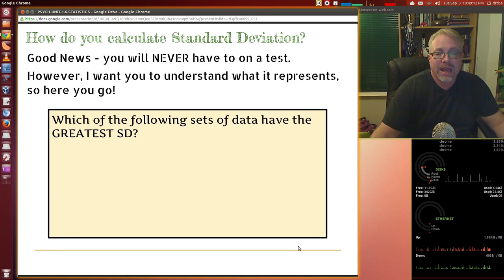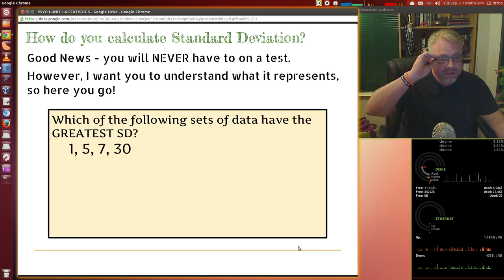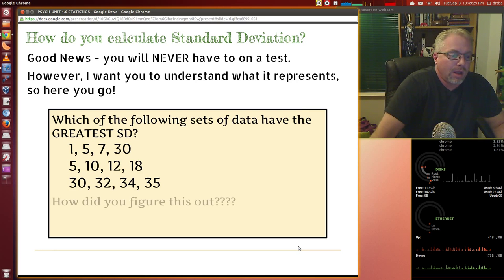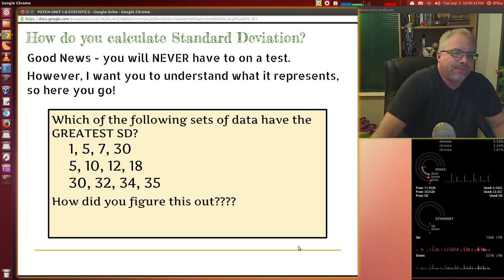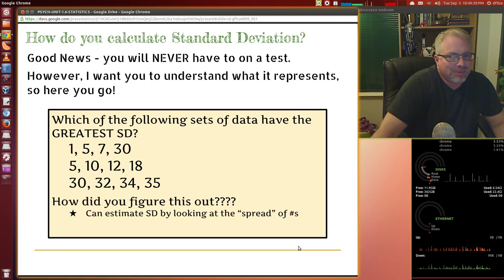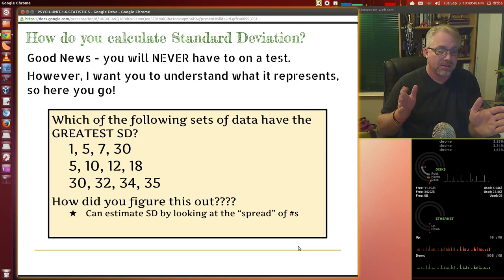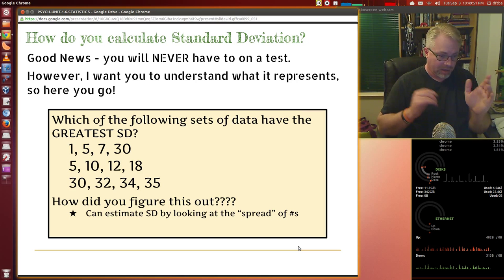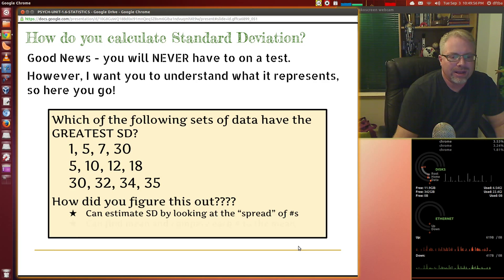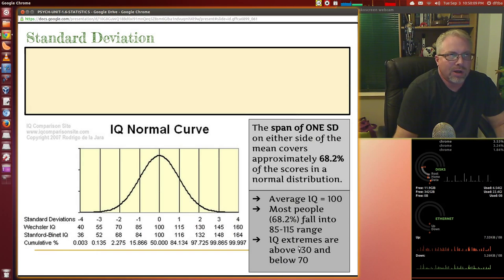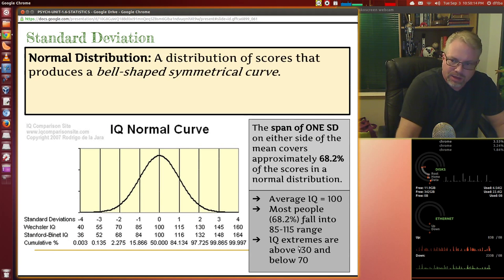Which of the following sets of data have the greatest standard deviation? 1, 5, 7, and 30. Or, 5, 10, 12, and 18. Or, 30, 32, 34, 35. I know some students, ooh, 30, 32, 34, 35 are bigger numbers. How did you figure out which one was the greatest standard deviation? Well, can you estimate it by looking at the spread of the numbers? What's the range here? Is it from 1 to 30, is that bigger than from 5 to 18? Yes. Is 1 to 30 bigger or greater range than 30 to 35? It is. So, that's one way you can kind of look at it by looking at the spread. You can find the mean and then compare each number to the mean. And then you'd have a better look at it. But you will see the normal curve. And there are some certain things you're going to just need to know.